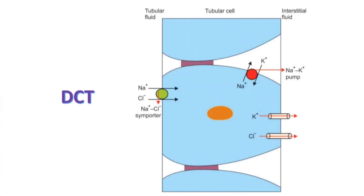DCT sodium reabsorption occurs via the sodium-chloride symporter. It transports sodium from the tubular fluid into tubular cells. The basolateral sodium-potassium pump then moves sodium into the lateral intercellular spaces. Thiazide diuretics act on the sodium-chloride symporter, causing diuresis and natriuresis.